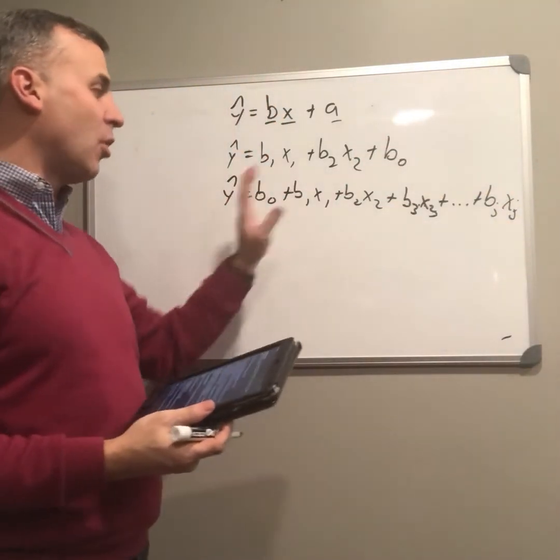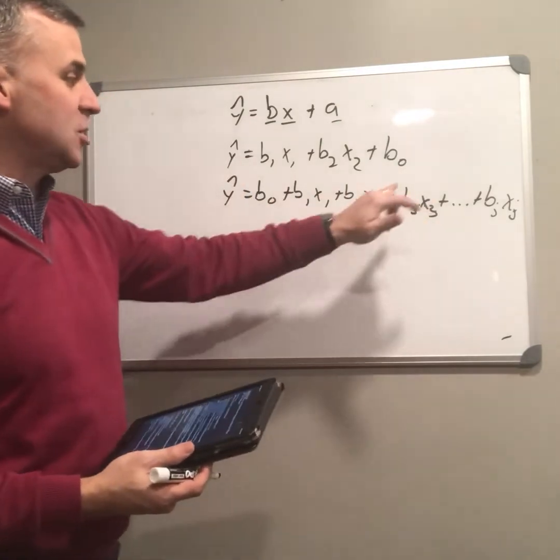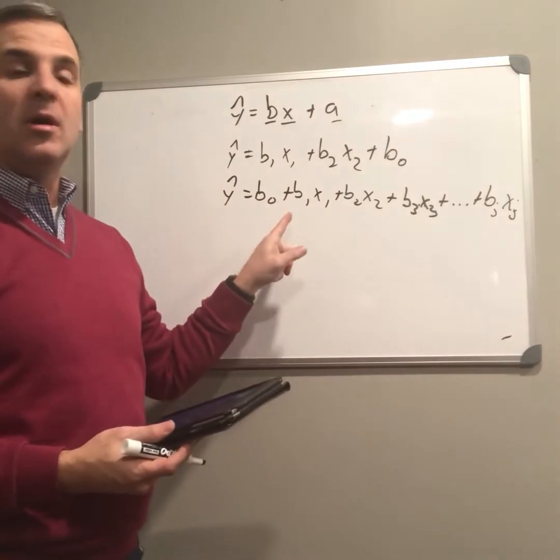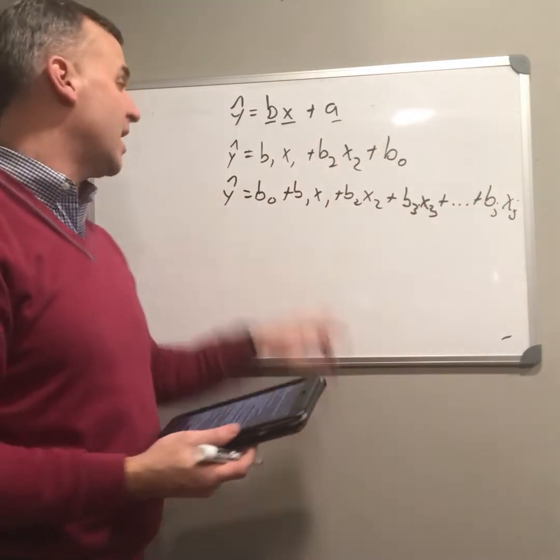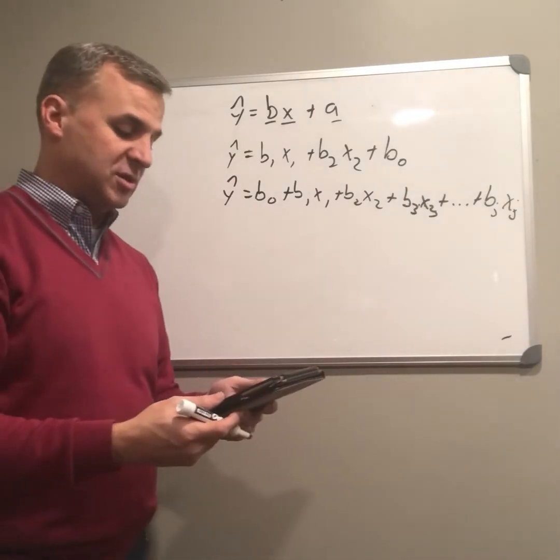So multivariate regression, multiple regression, has multiple predictor variables, x1, x2, x3, all the way out to xj, with each with its own coefficient, b sub 1, b sub 2, b sub 3, all the way out to b sub j. And b sub 0 then is the y-intercept.